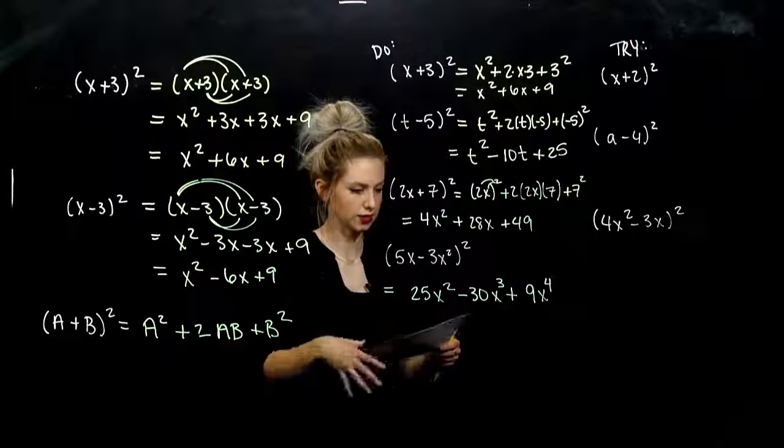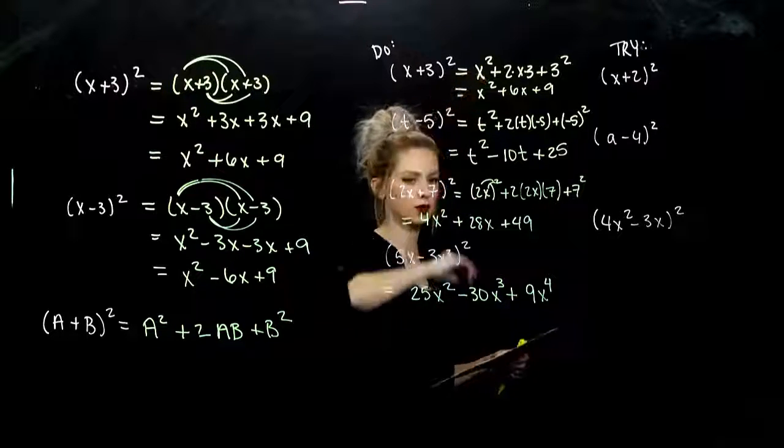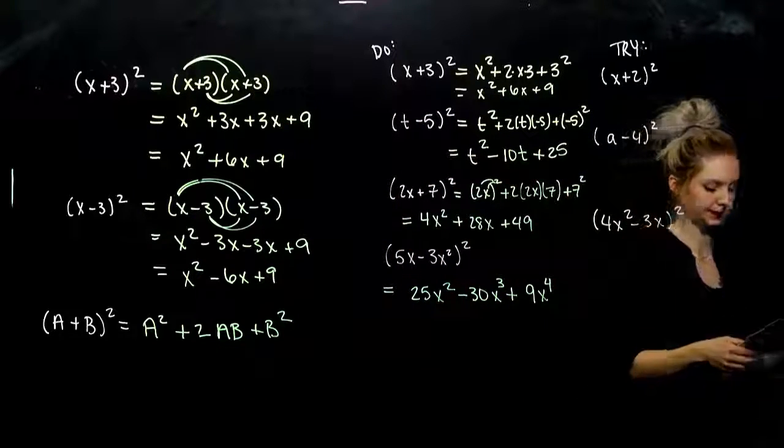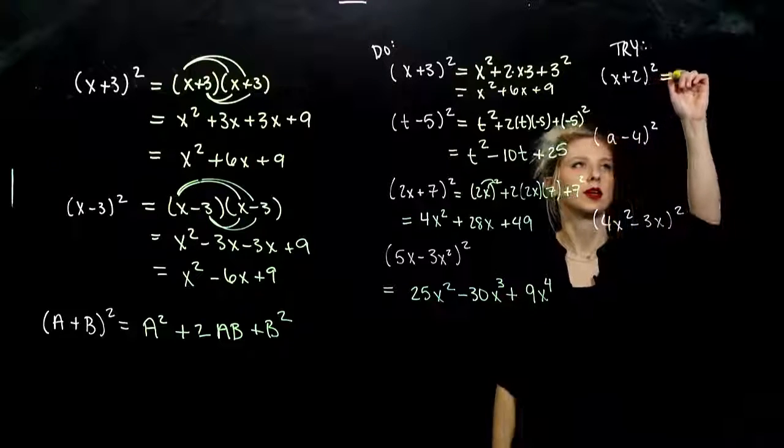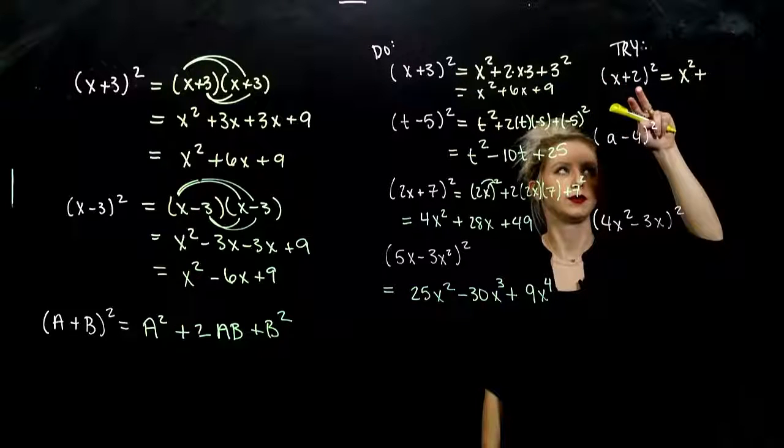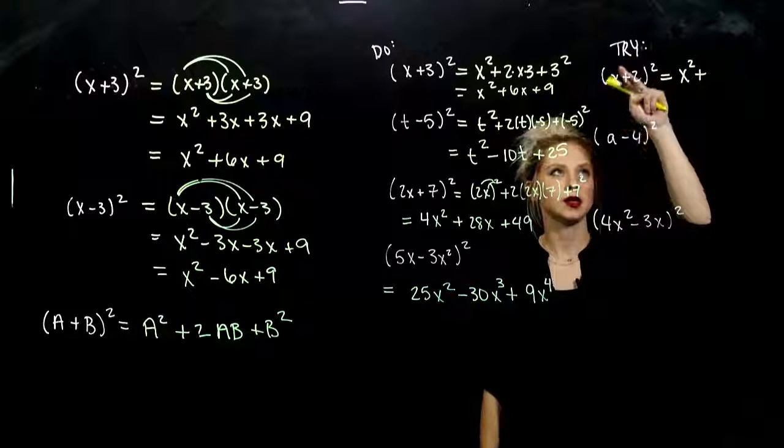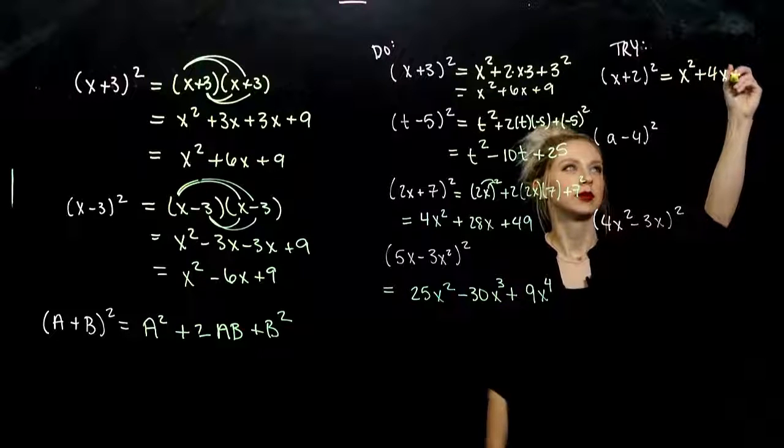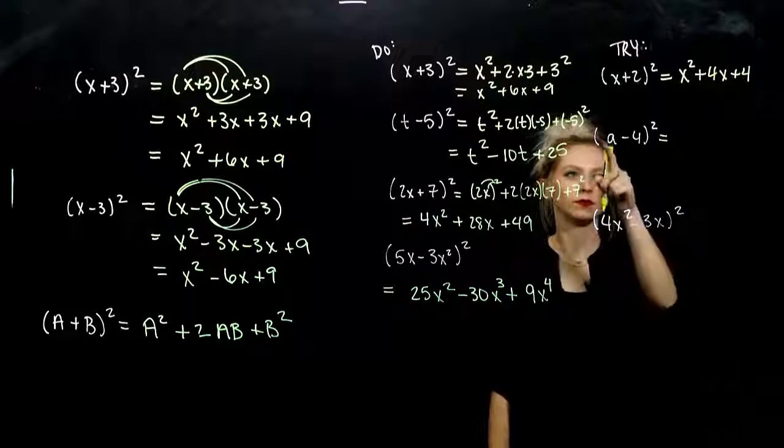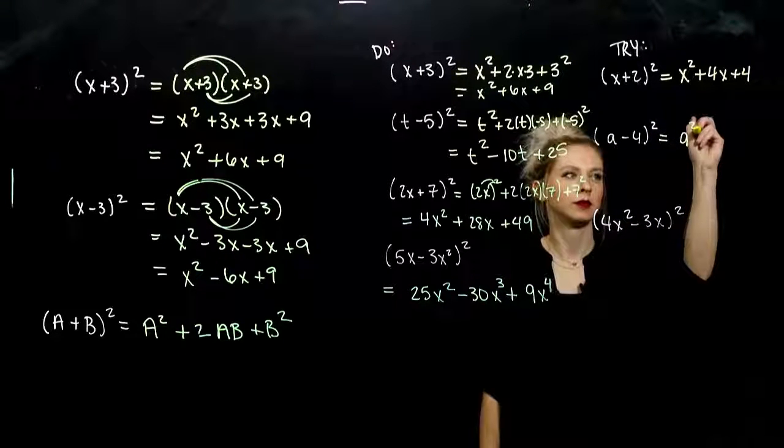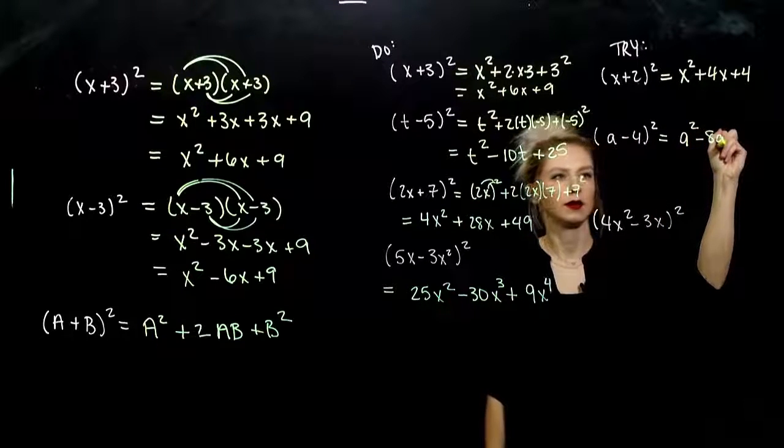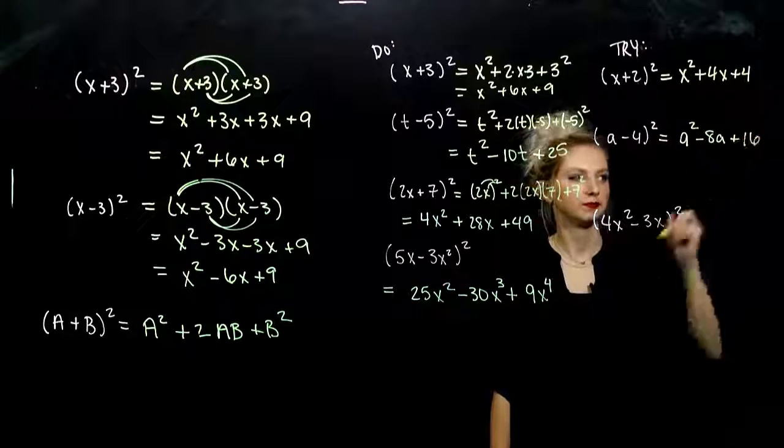Take those next three. Try to use the trick. If you have to write the in-between steps, go for it. If you have to foil out, that's fine as well. But get some practice. So the first, what are we looking at? First term squared plus 2 times the first times the second. So I've got negative 8A, and I'm adding my last term squared, 16.